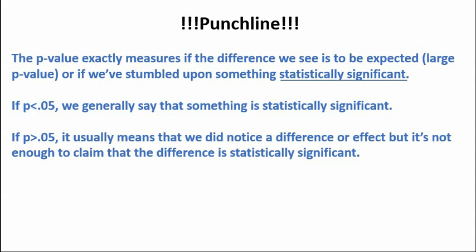When the p-value is less than 0.05 — that's generally the cutoff value we use — we say that something is statistically significant. A small p-value tells us no, this isn't just a fluke and this isn't just expected variation; there's something going on here. A small p-value means something's going on here.